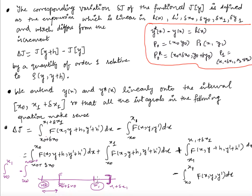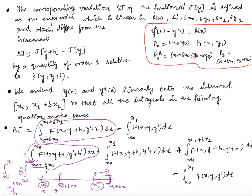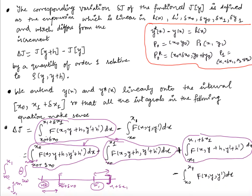Then I add the term from x₁ to x₁ plus δx₁. So basically I am dividing this integral into three parts: the first part is from x₀ to x₀ plus δx₀ with a negative sign, written as x₀ plus δx₀ to x₀; then from x₀ to x₁; and then from x₁ to x₁ plus δx₁.